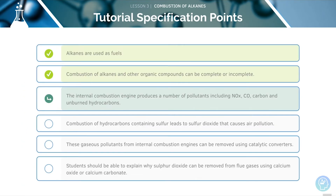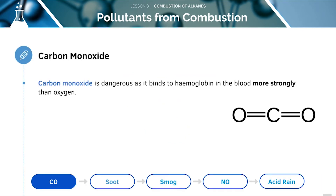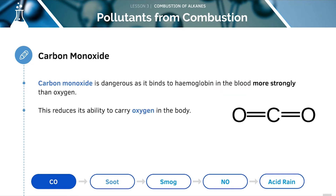Now let's move on to take a look at internal combustion. Here are some of the pollutants we can get from combustion — we'll be covering them one by one. Carbon monoxide is extremely dangerous as it binds to haemoglobin in the blood more strongly than oxygen, reducing its ability to carry oxygen in the body.